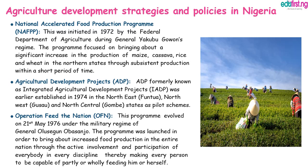Next, agriculture development strategies and policies in Nigeria. Some of the policies put in place by the government include: the National Accelerated Food Production Program, which was initiated in 1972 by the federal department of agriculture during General Yakubu Gowon's regime. This program focused on bringing about a significant increase in the production of maize, cassava, rice, and wheat in the northern states through subsistence production within a short period of time. Number two, the Agricultural Development Project, formerly known as the Integrated Agricultural Development Project, established in 1974.